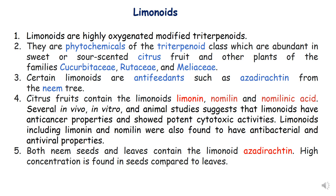What are limonoids? Limonoids are highly oxygenated, modified triterpenoids. They are phytochemicals of triterpenoid nature which are abundant in sweet or sour-scented citrus fruit and other parts of the families like Cucurbitaceae, Rutaceae and Meliaceae. There are certain limonoids which are antifeedants, such as azadirachtin from the neem tree. Antifeedants means that the compound is toxic to other organisms.